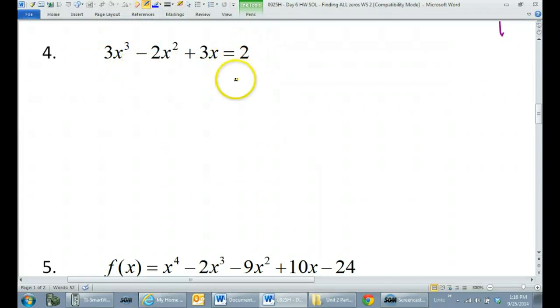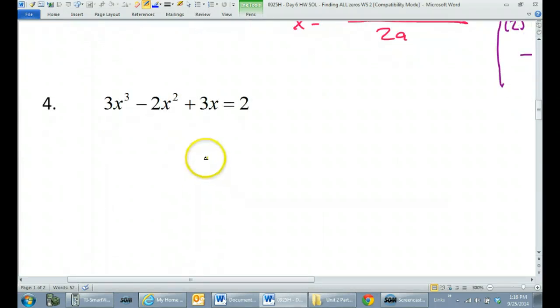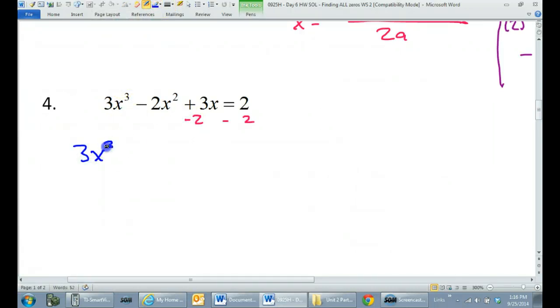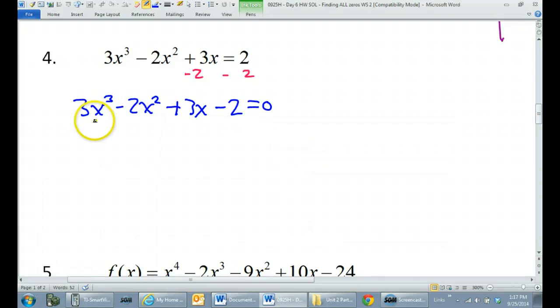This is an equation, instead of a function, the last one was in the form of a function. But, we'll treat it the same way. We just have the one additional step of we need to subtract 2 from both sides before we begin. So this is going to be 3x to the third power minus 2x squared plus 3x minus 2 equals 0. So, I'm seeing some grouping right now, you guys. We could go to the calculator and all that, but do you see the pattern? 3, 2, 3, 2. This is definitely a perfect candidate for grouping.